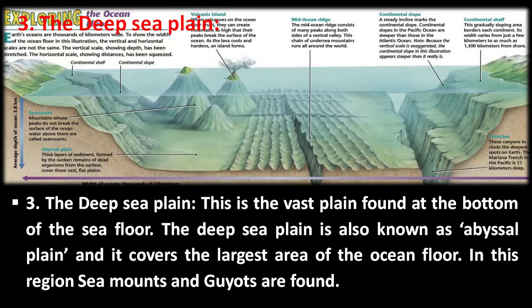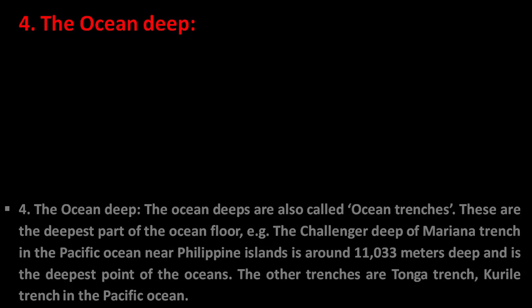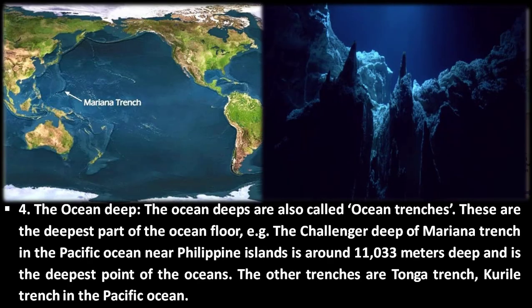The third part is the deep sea plain. The deep sea plain is the vast plain found at the bottom of the sea floor. It is also known as the abyssal plain and it covers the largest area of the ocean floor. In this region, sea mounts and guyots are found.